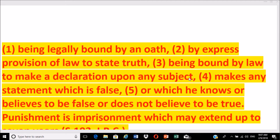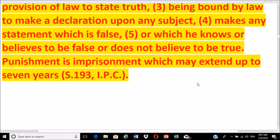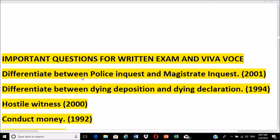The five major components of perjury are: giving willful false evidence; being legally bound by an oath or by express provision of law to state the truth; being bound by law to make a declaration upon any subject; making a statement which is false or which one does not believe to be true. The punishment for perjury under Section 193 IPC is imprisonment which may extend up to seven years.